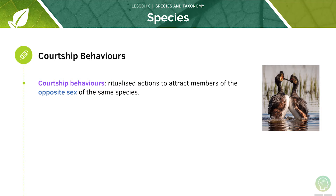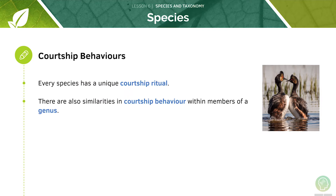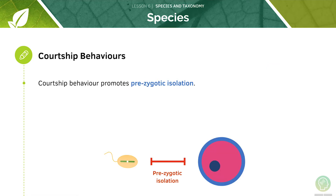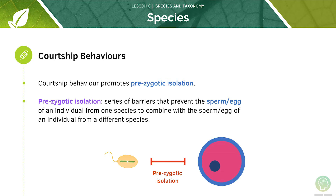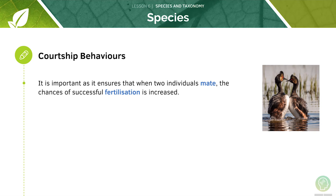Courtship behaviours are ritualised attractions to attract members of the opposite sex of the same species. They enable the development of a bond in order to raise the offspring together. Every species has its own courtship behaviour — for example, birds sing to attract other birds, and only animals of the same species will be attracted. Courtship behaviour promotes pre-zygotic isolation, which is a series of barriers that prevent the sperm or egg of an individual from one species combining with that of an individual from a different species. It is important because it ensures that when two individuals mate, the chances of successful fertilisation are increased.